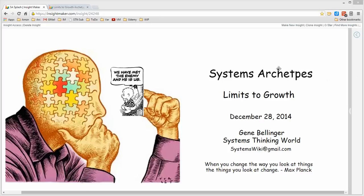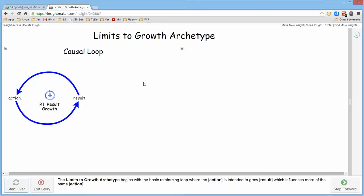In this video I want to talk about the limits to growth archetype. This archetype is based off of the basic reinforcing or growth structure where action produces a result which influences more of the same action, resulting in a structure that typically creates exponential growth.